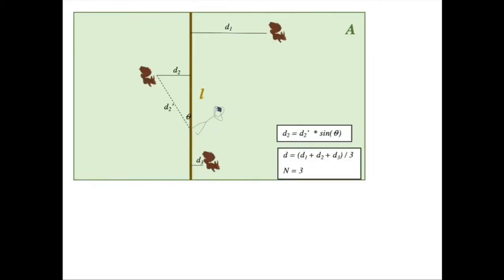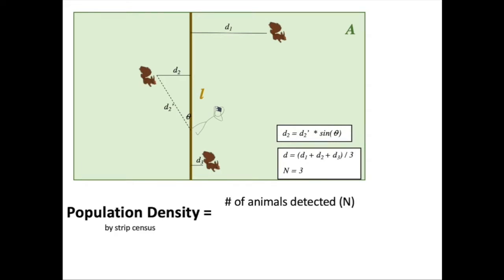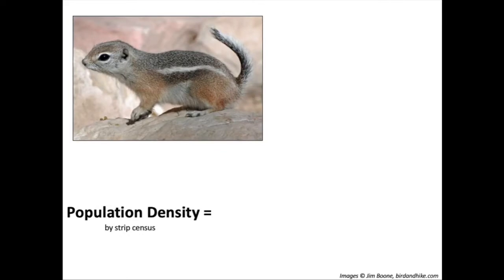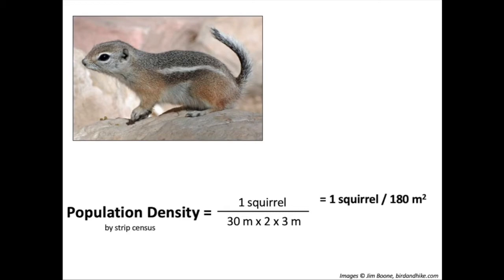To conduct population density estimations by strip census, first tally up the number of animals detected — in this diagram that would be three total squirrels detected. Then divide by the total length of the transect walked. That would be L times two times the average perpendicular distance from the transect at which you detected the squirrels. You can also multiply by the survey area to convert population density to total population size. In my example, I walked a transect and detected one squirrel over 30 meters, and that squirrel was about three meters away from my transect. This gives a population density of about one squirrel per 180 meters squared, or about 0.055 squirrels per meter squared. Multiplying by 10,000 meters squared per hectare gives us about 55 squirrels per hectare.